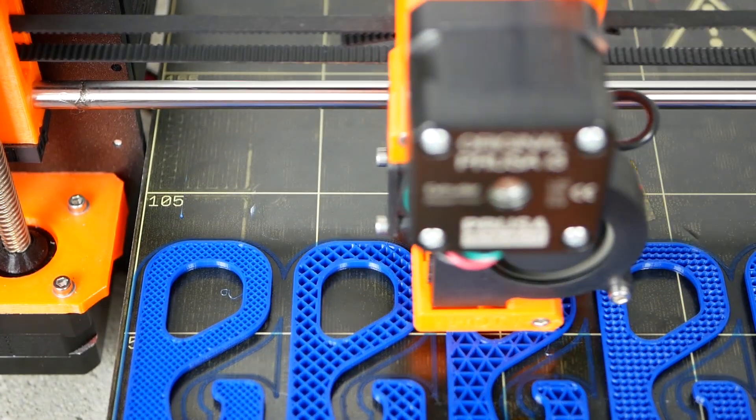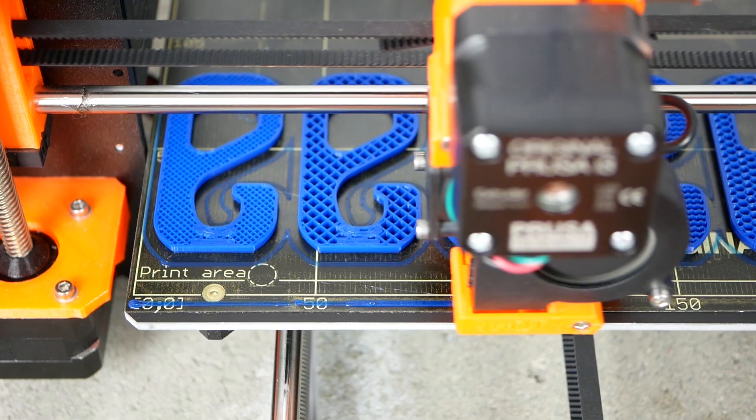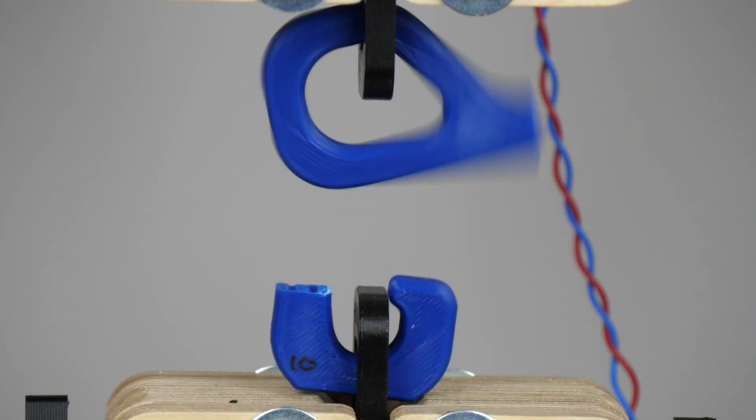But what's your approach at the moment if you want to print parts that need to handle some beating? Let me know down in the comments!